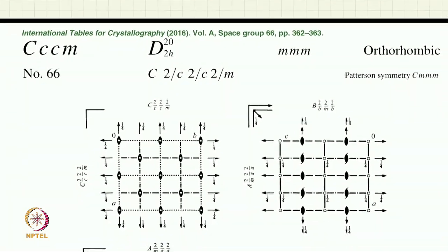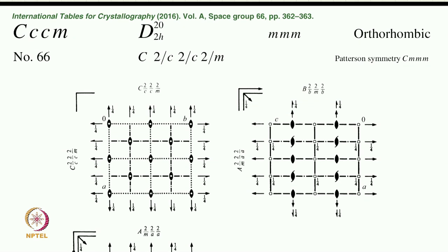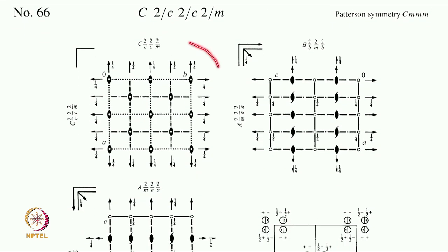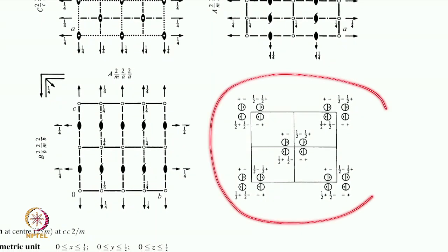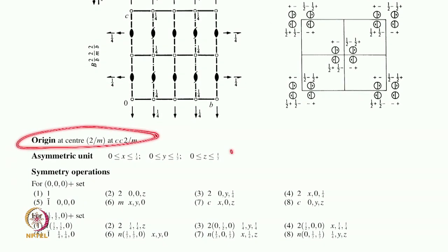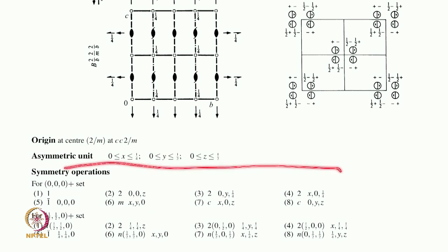Welcome to this seventh part in our series on interpretation of international tables. In this part, we will look at the generators selected. If we look at space group number 66, CCCM, we have looked at the first page in detail — the symmetry element diagram, the general position diagram, the selection of origin, the asymmetric unit, and the symmetry operations. Now let us continue, as this is only half of the information for this particular space group.